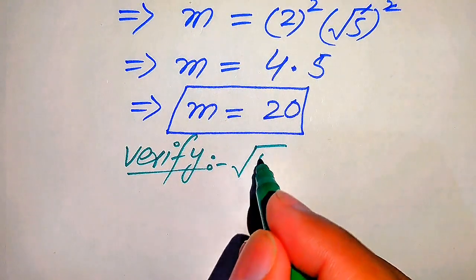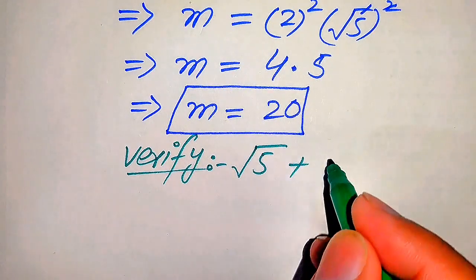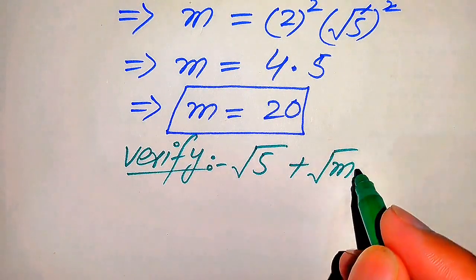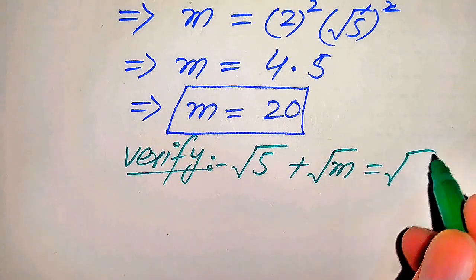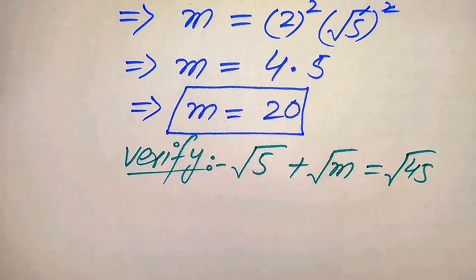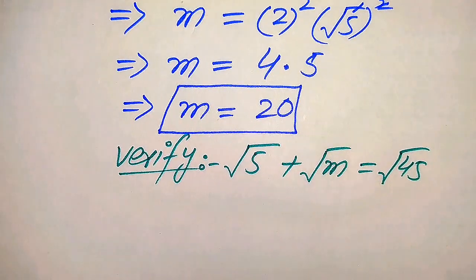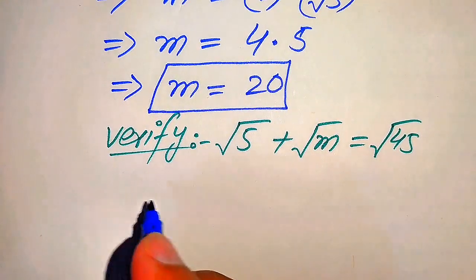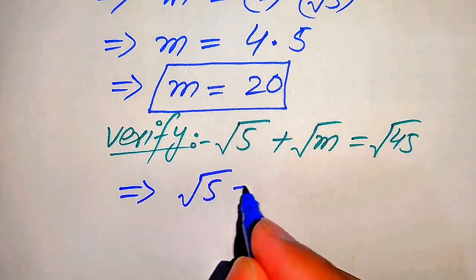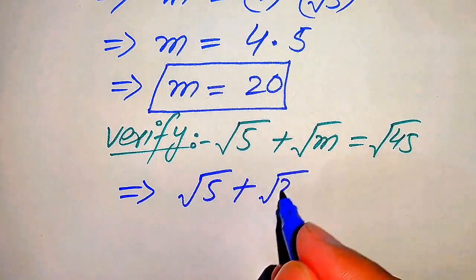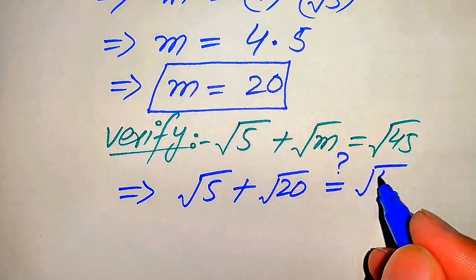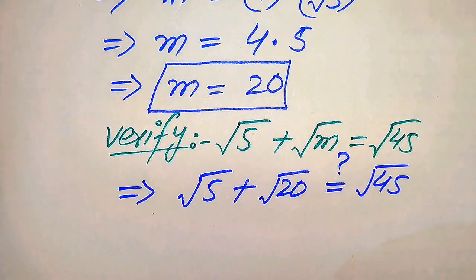For verification we copy down the given equation: square root of 5 plus square root of m equals square root of 45. We substitute the value m = 20, giving us square root of 5 plus square root of 20, and we check whether this equals square root of 45.